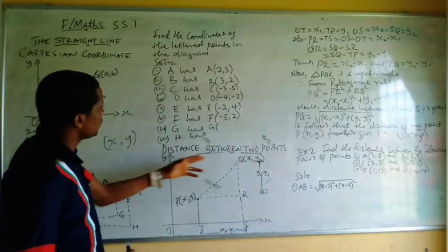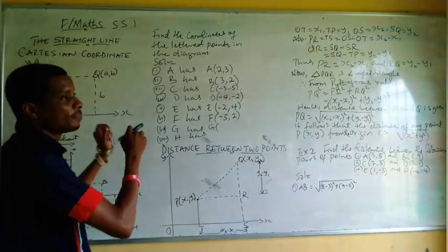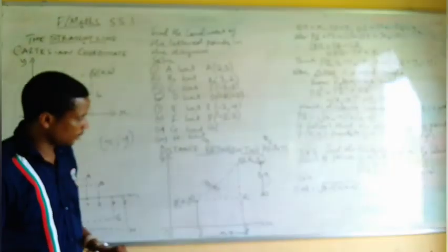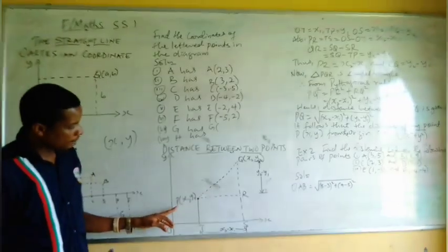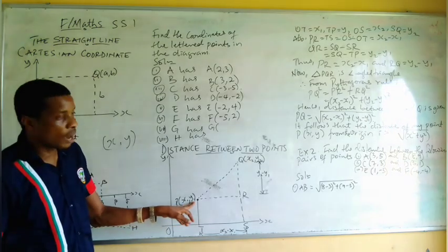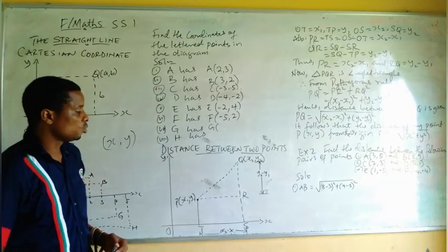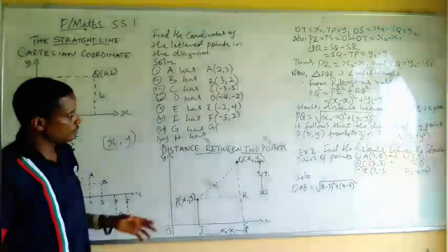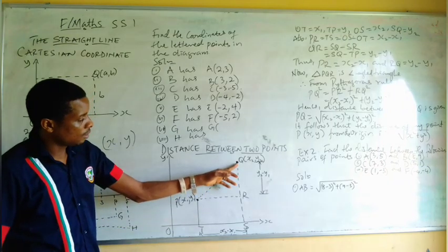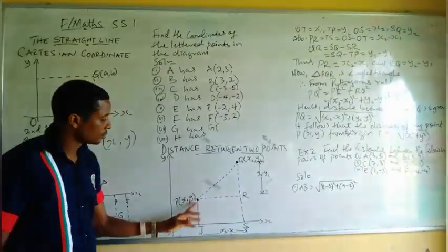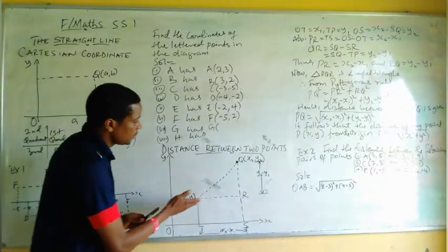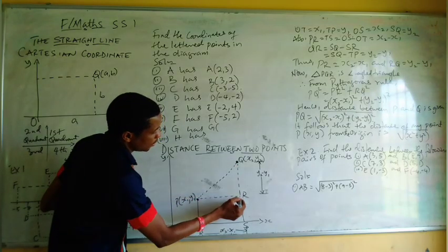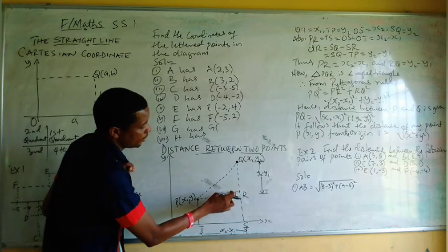Now let's move on to the distance between two points. We know that we can identify a point with coordinates. The next thing is to determine the distance between two points. From the diagram here, I have point P at X1 comma Y1 and Q at X2 comma Y2. If I join these two points, I can draw a perpendicular line to meet at R, so that I will have a 90-degree angle there.